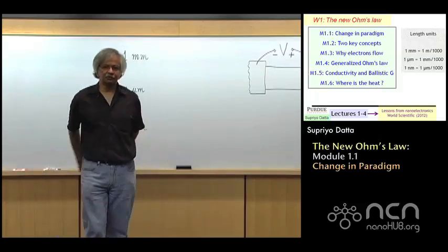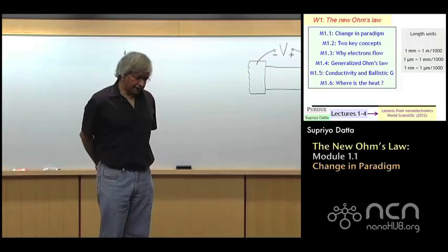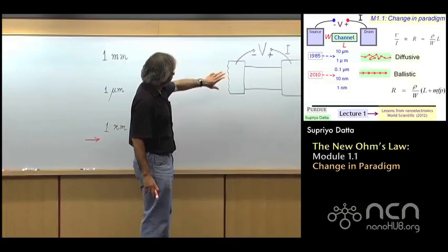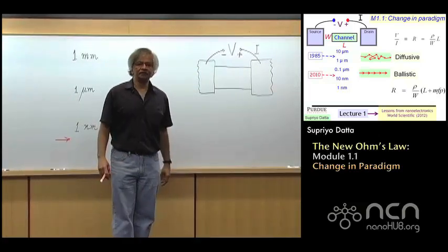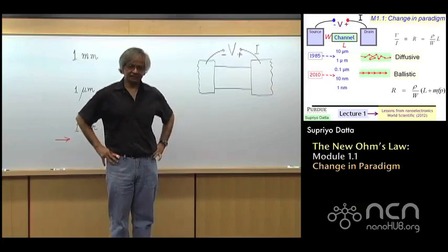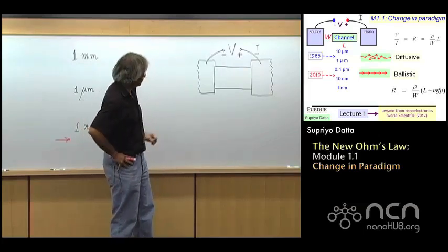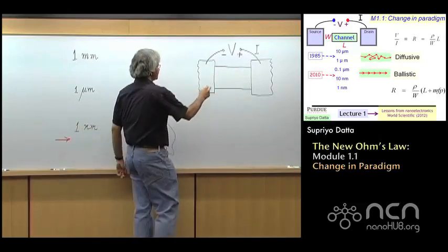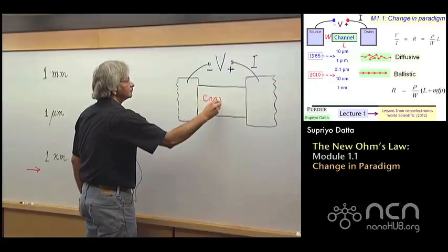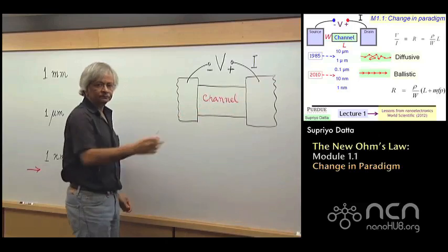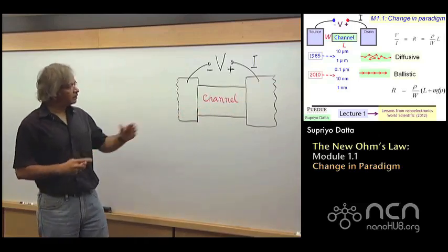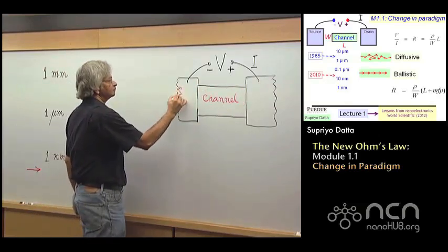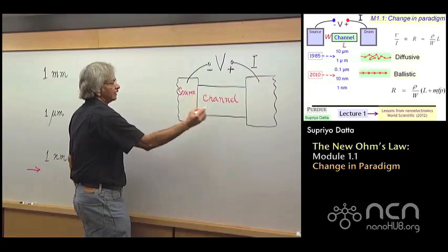Now, what's that got to do with nanoelectronics? Well, let me start by noting that in electronics, one of the most important devices is this transistor, which in its simplest form consists of a conductor that you usually call the channel through which electrons can flow between two contacts.